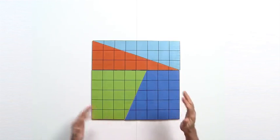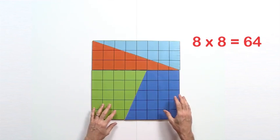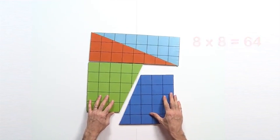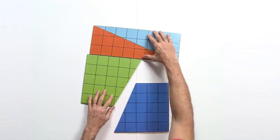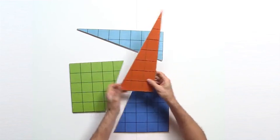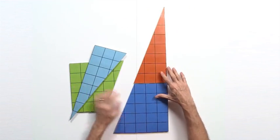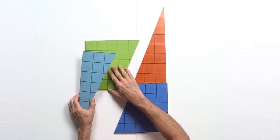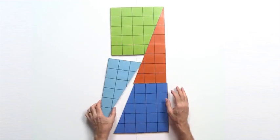A square 8 by 8. So it has 64 of these little boxes. I can take this square and rearrange the pieces. So put the trapezoid on the bottom, put a triangle on the top, and then another trapezoid, and then a triangle.